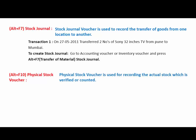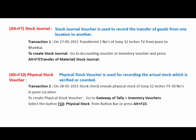ALT+F10 is for Physical Stock Voucher, which is used for recording the actual stock that is verified or counted. For example, a stock check reveals physical stock of Sony 32-inch TV is 13 units in Pune location. To create a Physical Stock Voucher, go to Gateway of Tally, Inventory Vouchers, and select ALT+F10. Whatever stock is in hand at day-ending or year-ending, that stock is recorded into the Physical Stock voucher type.